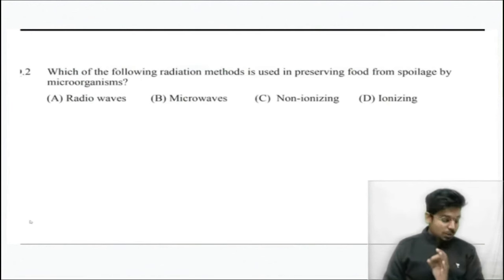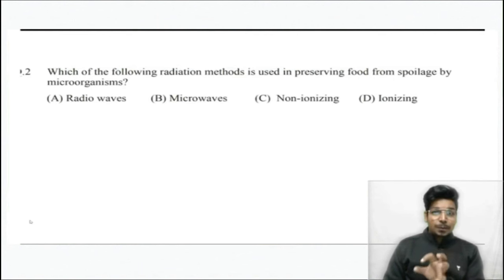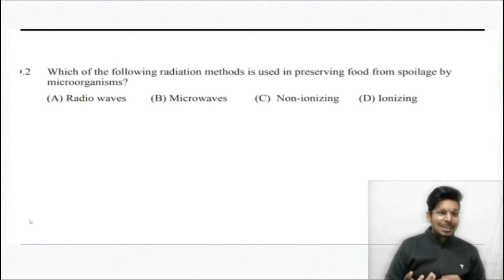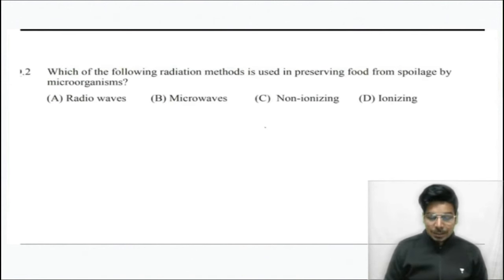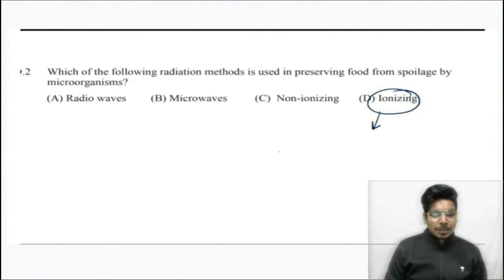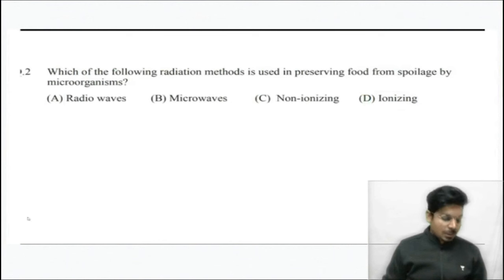Question number two: Which of the following radiation is used in preventing food from spoilage by microorganisms? Microwave, radio waves — mostly ionizing radiation is used. Ionizing rays are used generally to protect food from spoilage.